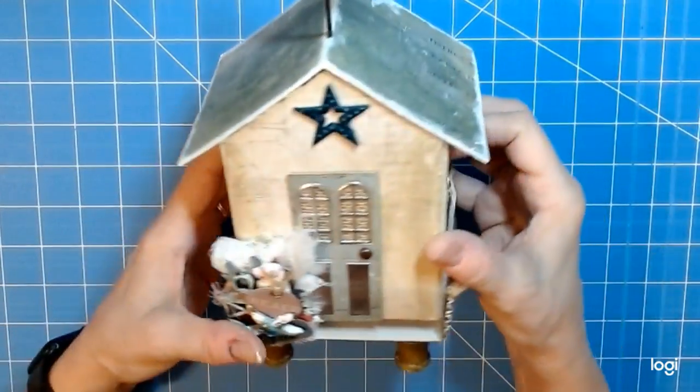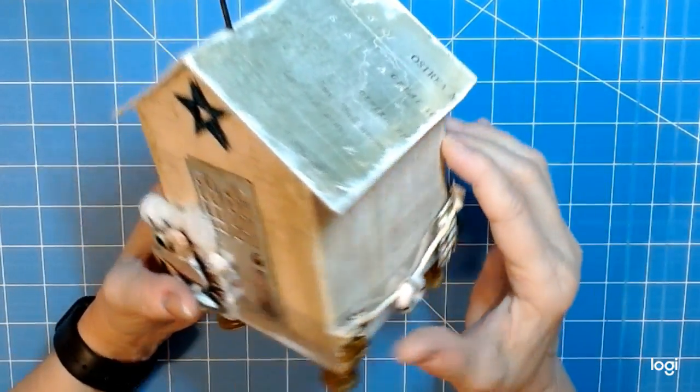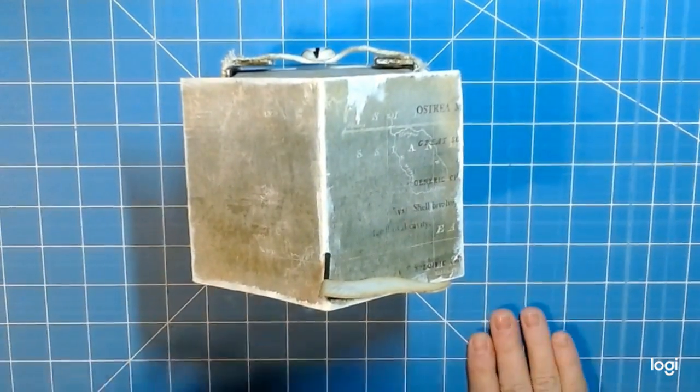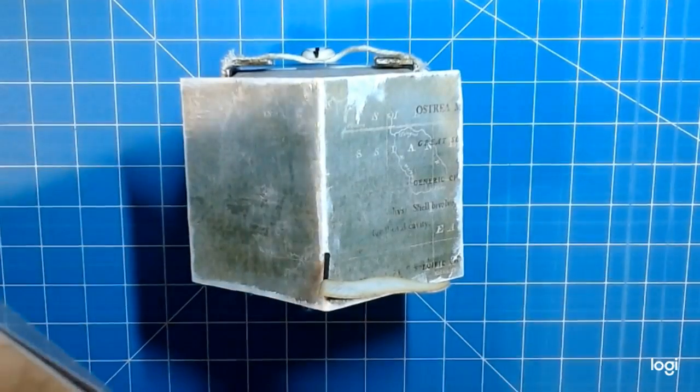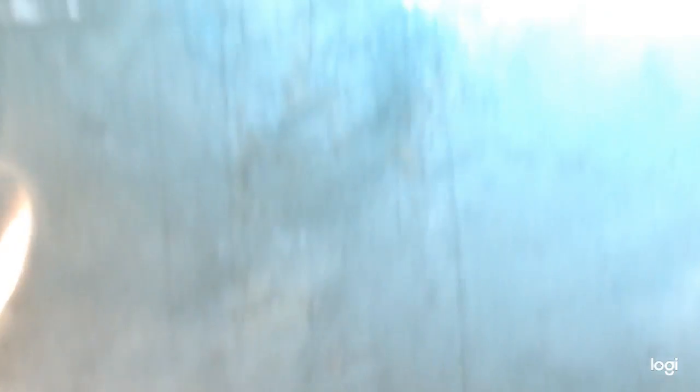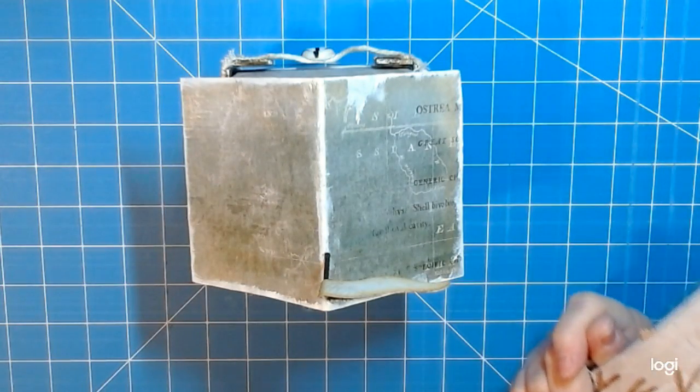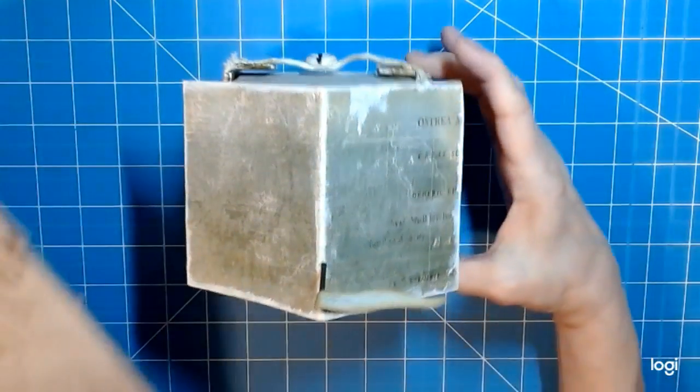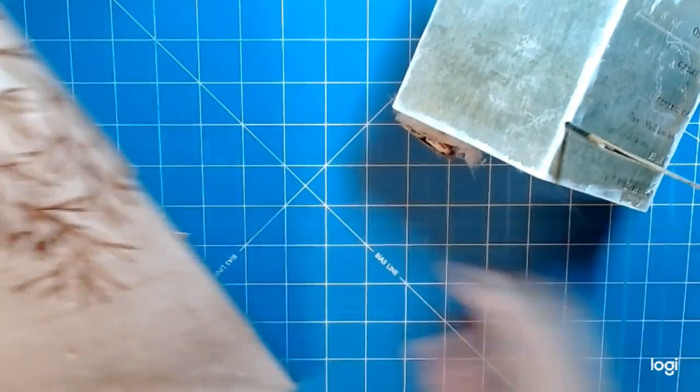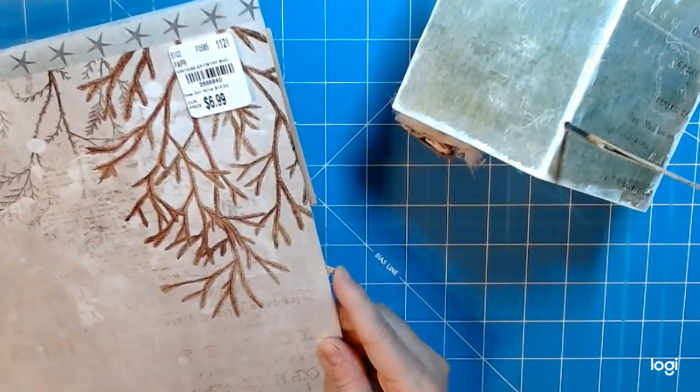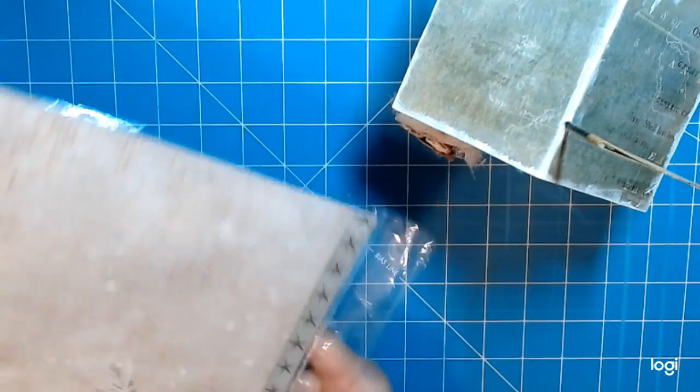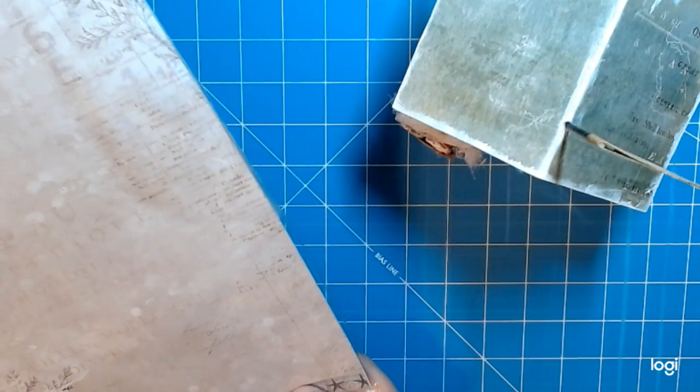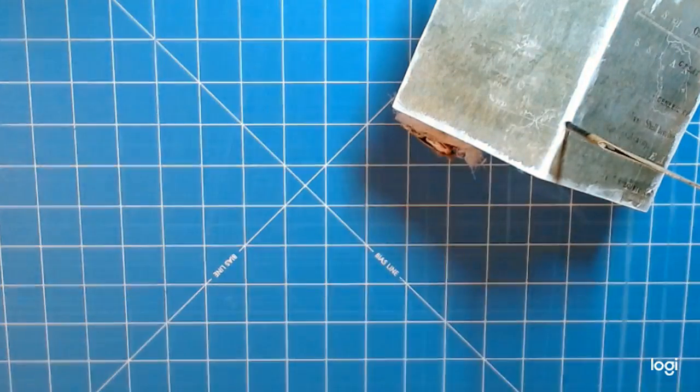I used some paper that I had in my stash. I'm not sure if you can see it—it's 49 Market is the name of it, and it was something that I picked up at Tuesday Mornings, yes I believe so. I used that paper and it just came with a few sheets and a couple of pieces of cutouts.